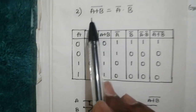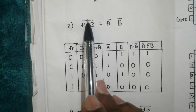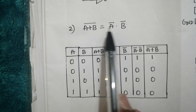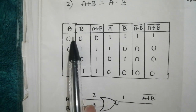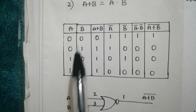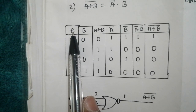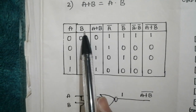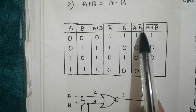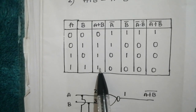Coming to the second De Morgan's law, the statement is: complement of sum of two variables is equal to product of complement of each variable. The respective truth table is given below. Again we have two inputs and four possible input combinations. So first I am going to construct A plus B, which is nothing but OR operation between the input variables A and B. Next I have A bar, complement of A, B bar, complement of B. Next AND operation between A bar and B bar. Next, A plus B whole bar, which is nothing but complement of A plus B.